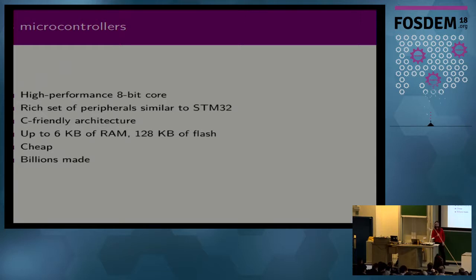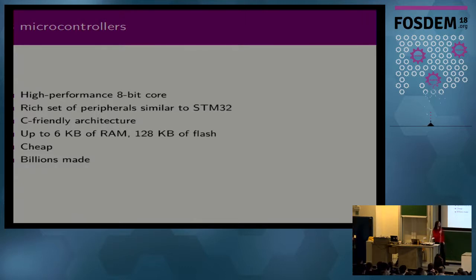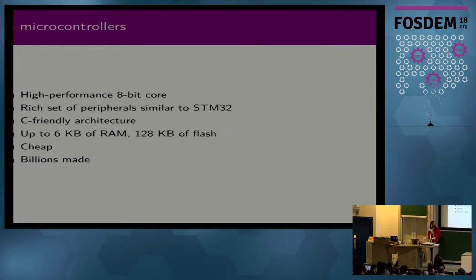The bigger devices have 6 kilobytes of RAM, 128 kilobytes of flash, and 2 kilobytes of EEPROM. But there are also smaller ones with just 1.5 kilobytes of RAM, maybe 8 kilobytes of flash, and a few bytes of EEPROM. The smaller ones are really cheap — 20 cents, and if you need a lot you can probably get them for 10 cents. Billions have been made. I think back in 2016 ST announced they'd sold already 2 billion. They appear in heating thermostats to vehicles, and one recent project is developing free firmware for e-bikes that have STM8 controllers.